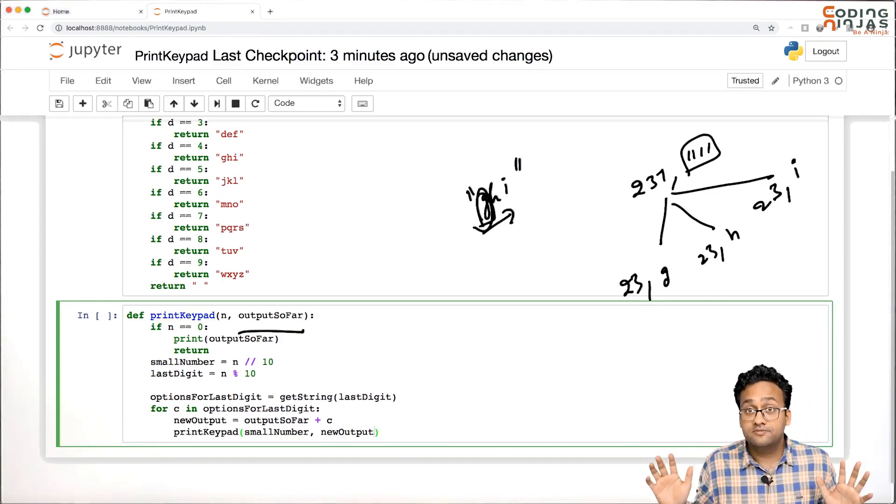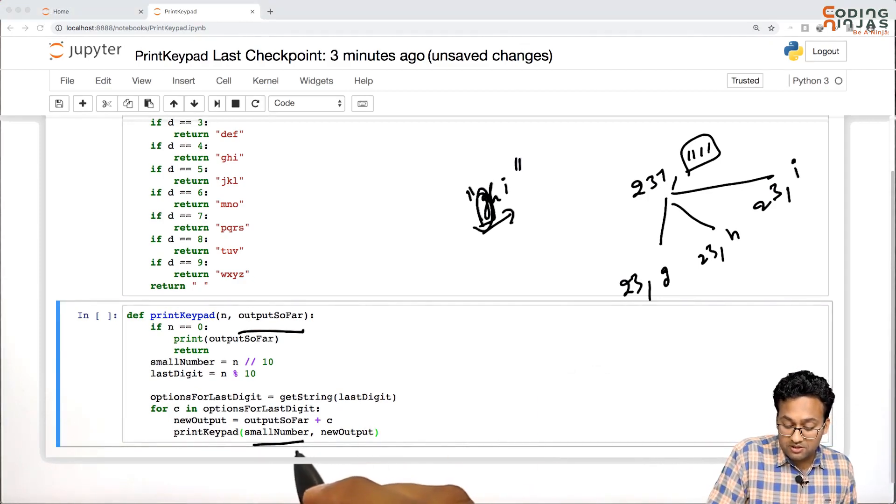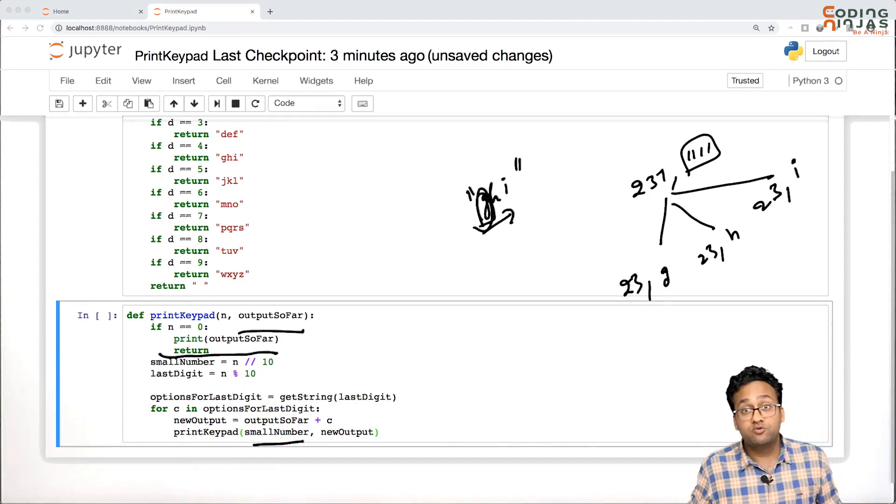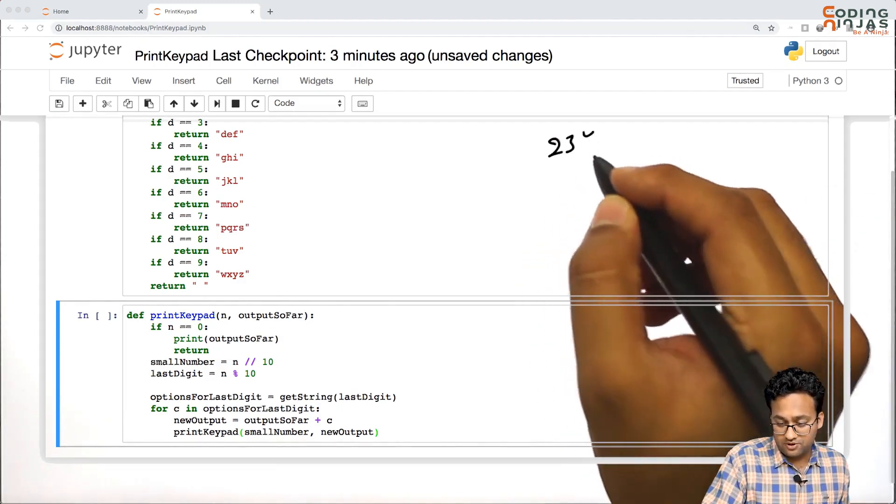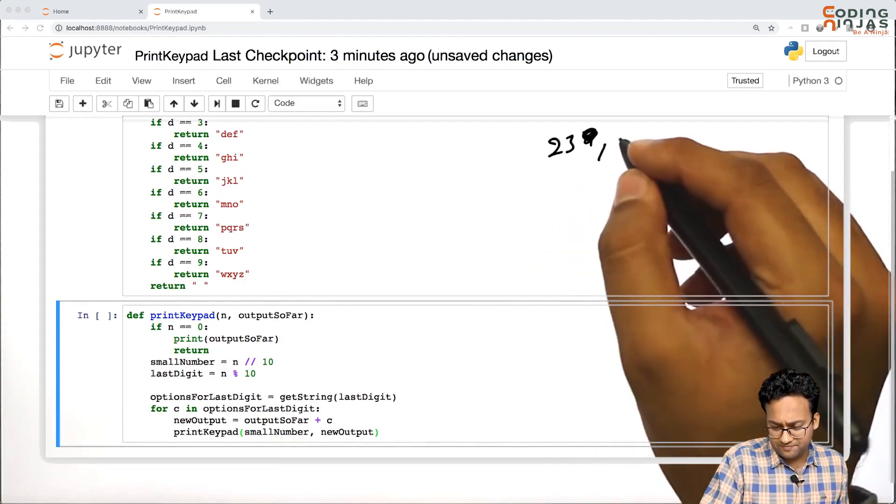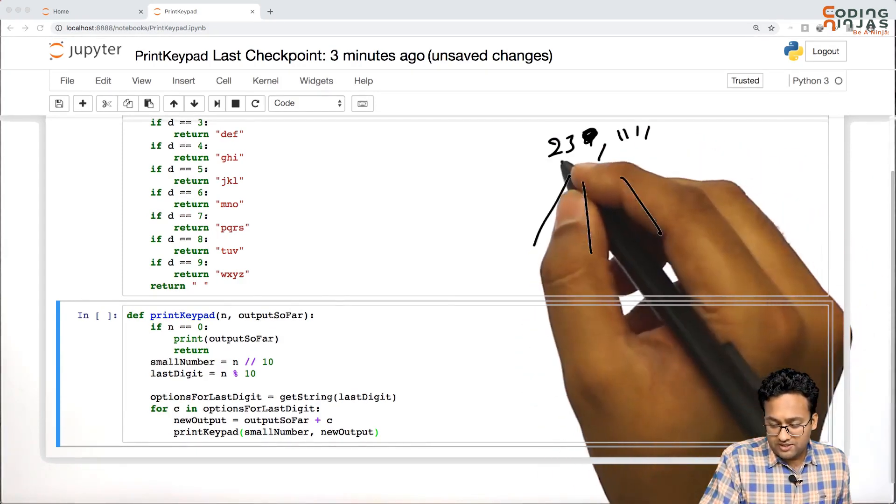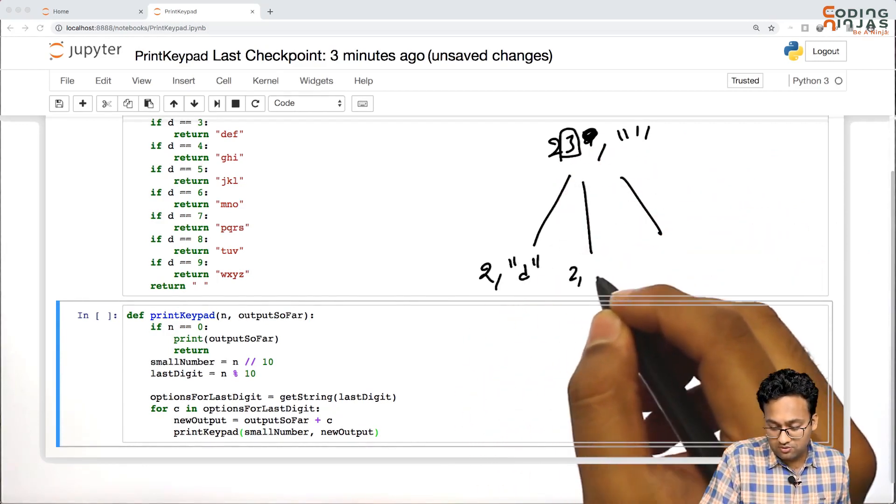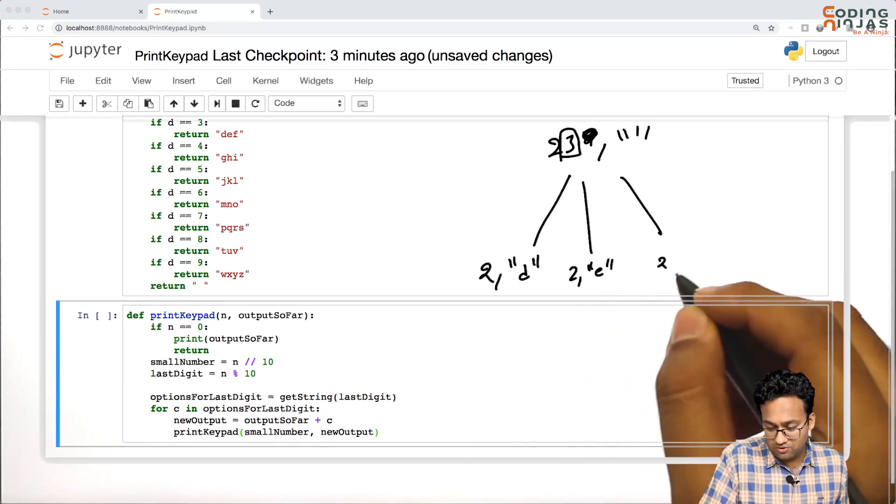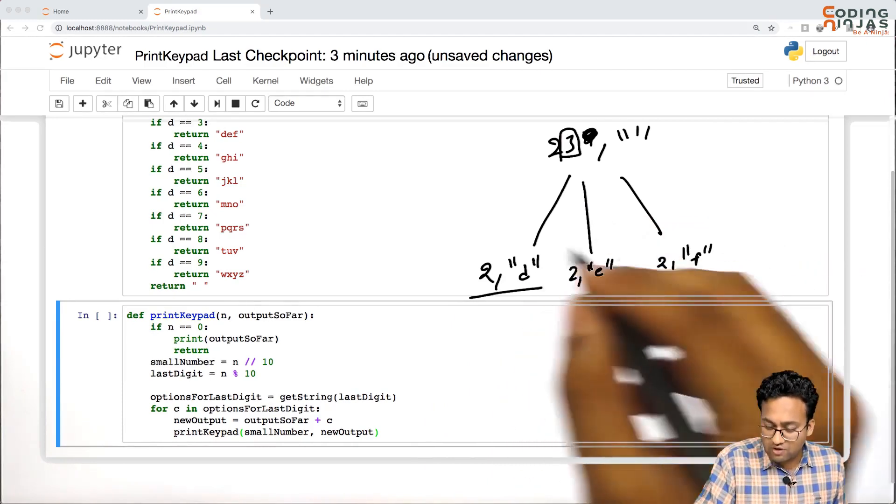And that's it. What will happen is while you keep reducing this number, you will eventually reach here corresponding to one combination and you'll be able to print it out. Let's take an example of 23. Initially you will be passed an empty string. You will take a decision corresponding to 3, so we'll call 2 comma d, 2 comma e, 2 comma f.